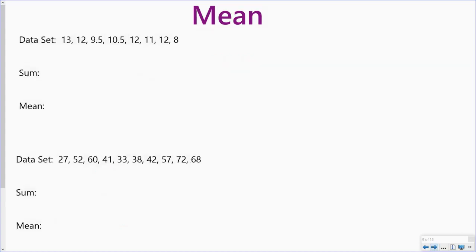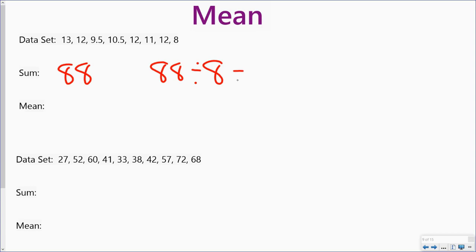Let's take a look at these two data sets. When I add the first one up, I come up with a total of 88, and I have eight numbers in my data set. So I'm going to take 88 divided by 8, and that gets me 11. So my mean is 11 for this data set.